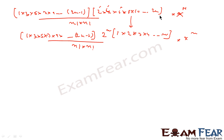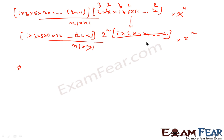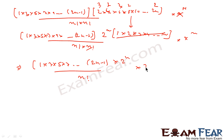We had 2 · 4 · 6 · 8 · … · 2n. Taking 2 common from each of the n terms gives 2^n · (1 · 2 · 3 · … · n) = 2^n · n!. We observe that n! cancels with the n! in the denominator. So we are left with 1 · 3 · 5 · 7 · … · (2n−1) · 2^n divided by n!, times x^n.